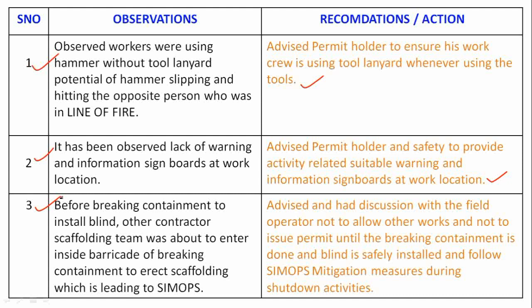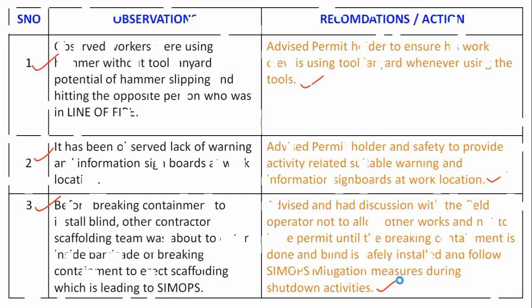Observation 3: Before breaking containment to install a blind, the contractor scaffolding team was about to enter inside the barricade of breaking containment to erect scaffolding, leading to a SIMOPS situation. Recommendation: Advise and discuss with the field operator not to allow other workers and not to issue the permit until breaking containment is done and the blind is safely installed, following SIMOPS mitigation measures during shutdown activities.